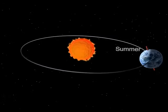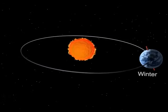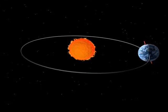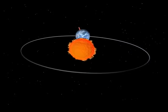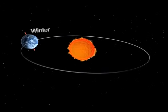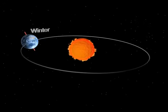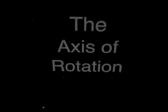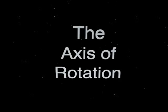The tilt of the axis affects when seasons occur. When the axis tilts toward the Sun, the northern hemisphere experiences summer while the southern hemisphere experiences winter. In half a year, the Earth will revolve elliptically counterclockwise around the Sun while the axis stays tilted at 23.5 degrees.